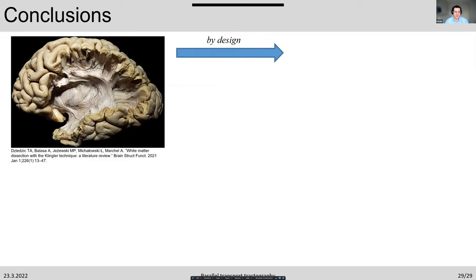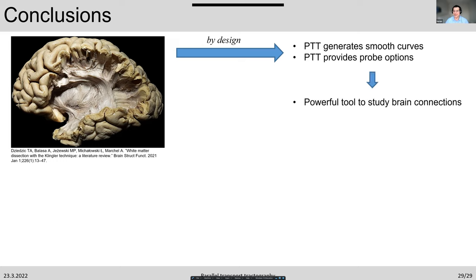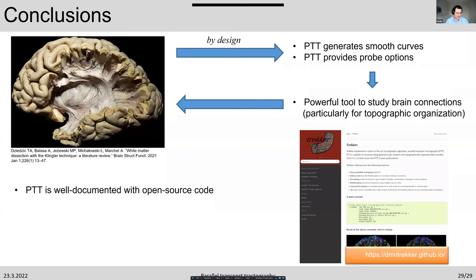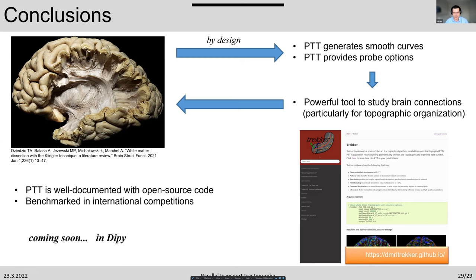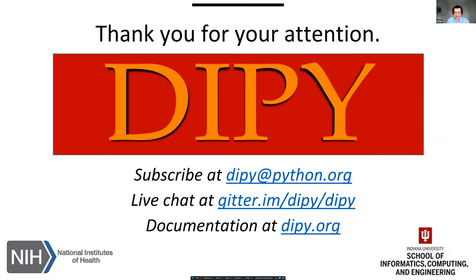In conclusion, we designed parallel transport tractography to generate smooth curves and provide probe options, and we are still at the beginning of exploring the full range of possible probe options. These provide a powerful tool to study brain connections, particularly for topographic organization. PTT is well documented with open-source code in the Tracker software, benchmarked in several international competitions with very good rankings, and is now being implemented in DIPY as well, which will be an opportunity for interested researchers to contribute to its development.